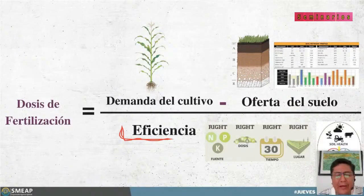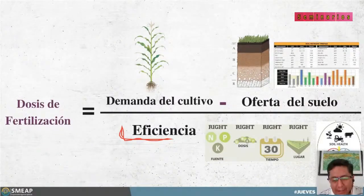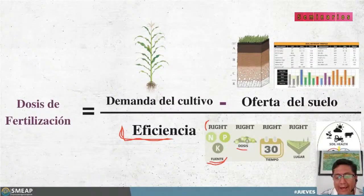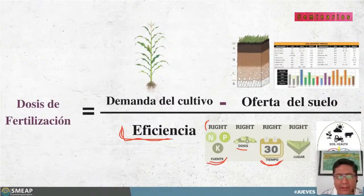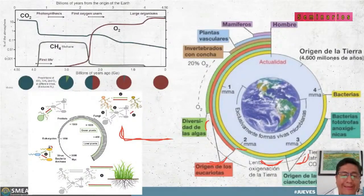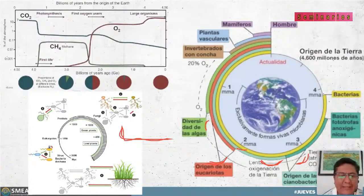Es muy importante que cuando ustedes calculan cuánto van a necesitar de algún nutriente, no pueden cambiar cuánto requiere su cultivo. Suele haber cambios según el tipo de variedad y lo que ofrece el suelo, para eso nos sirve el análisis de fertilidad del suelo, que es una herramienta bastante útil. La eficiencia depende de muchos factores y no hay ningún nutriente ni condición que nos permita tener el 100% de aprovechamiento. Podemos incrementar esa eficiencia a partir de lo que llamamos las cuatro R's.